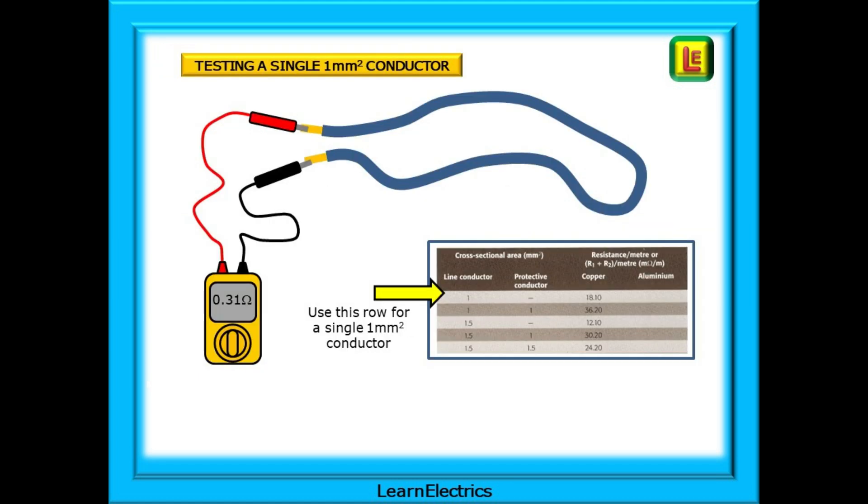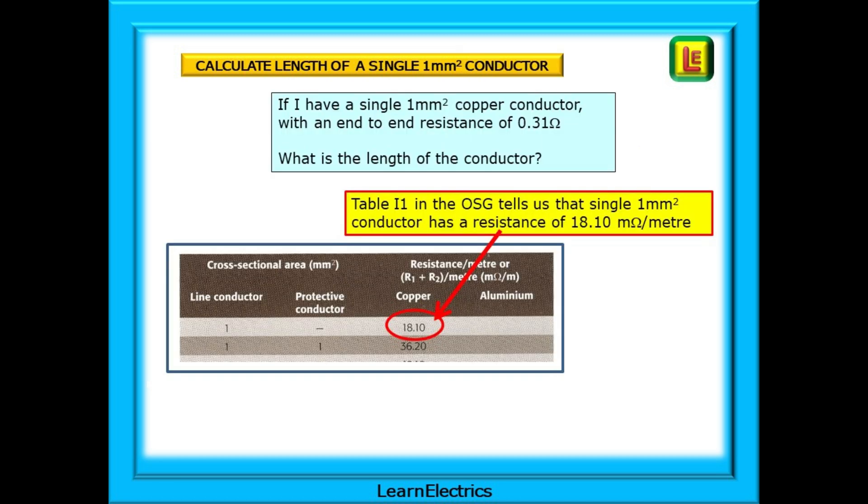Let's begin with testing a single one square millimeter conductor as an end-to-end test. There is only one cable and we should therefore select the correct row from the table. The row with one for the line and nothing else, just a dash for the protective conductor. A question then. If we have a single one square millimeter copper conductor with an end-to-end resistance of 0.31 ohms, what is the length of the conductor? Using table I1 in the on-site guide and selecting the correct row, we're told that a one square millimeter conductor has a resistance of 18.10 milli-ohms per meter length.